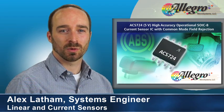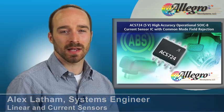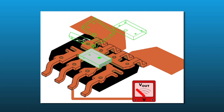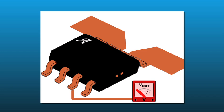Hall effect current sensors work by measuring the magnetic field produced by the current flowing through the sensor. This technology provides high accuracy current measurement with galvanic isolation as the IC does not touch the integrated conductor.